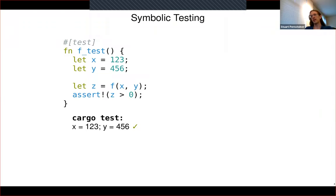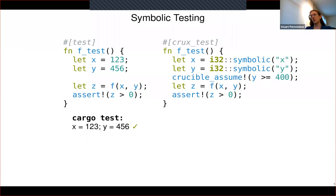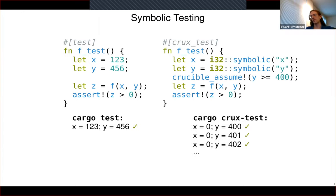With CruxMirror, you can write a symbolic version of this test, where your inputs are replaced with symbolic variables. You can set some assumptions that constrain those variables, then call your function as normal and make an assertion as normal. When you run this test through cargo crux-test, it will check that the function returns the desired result on all possible combinations of those symbolic variables, subject to the constraints that you set.